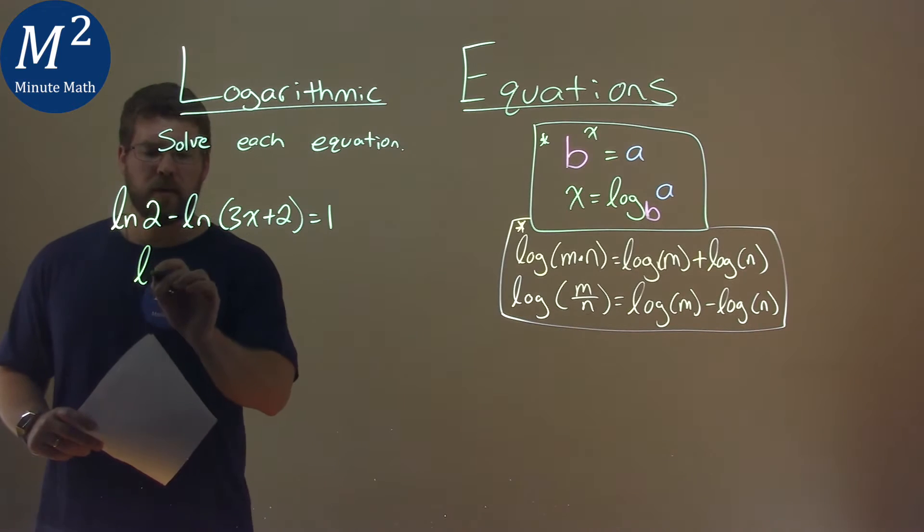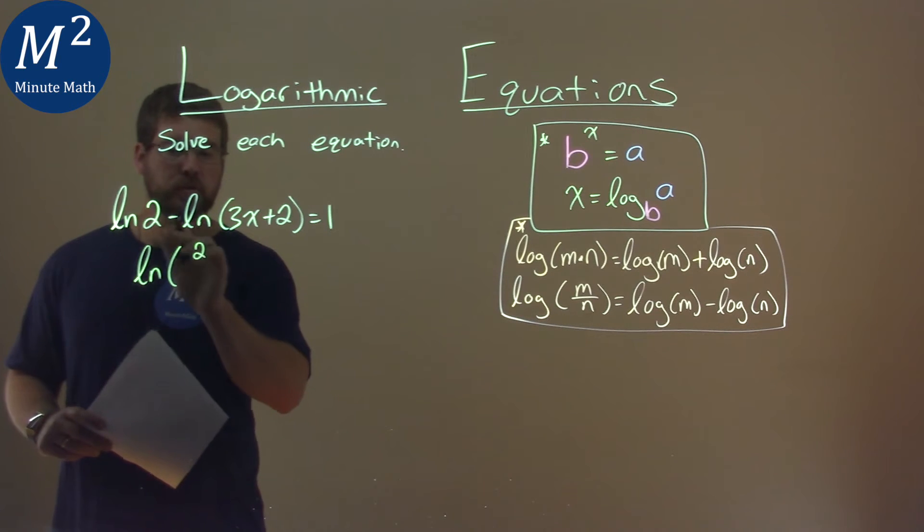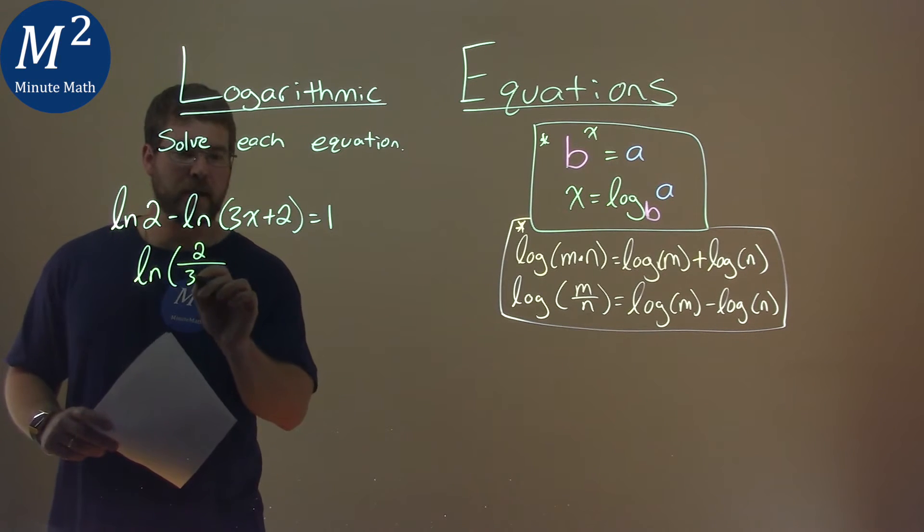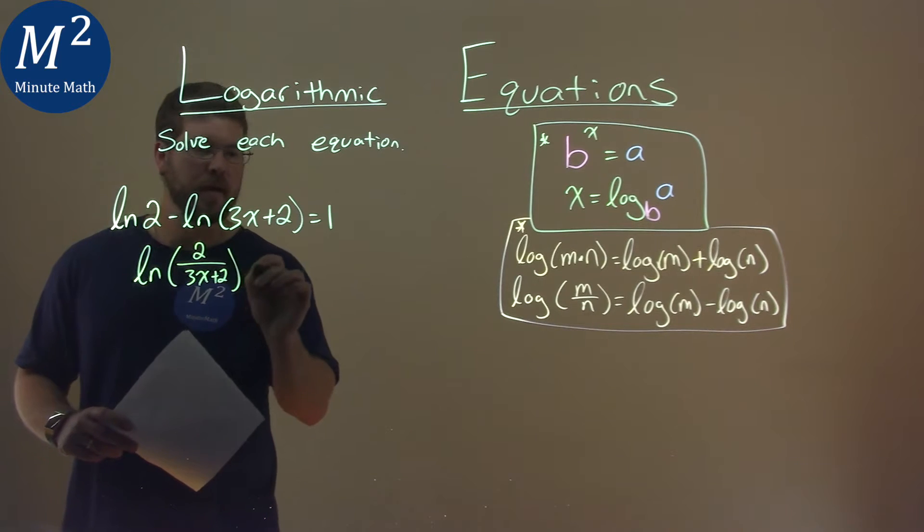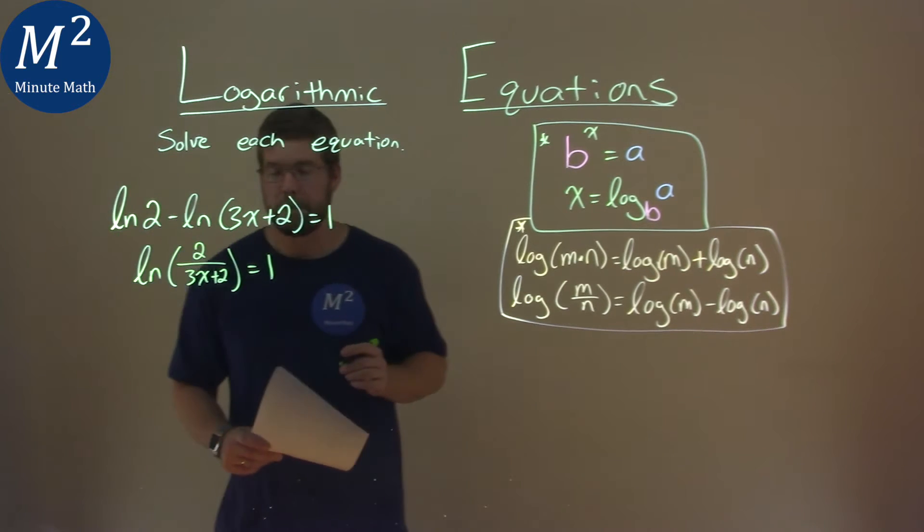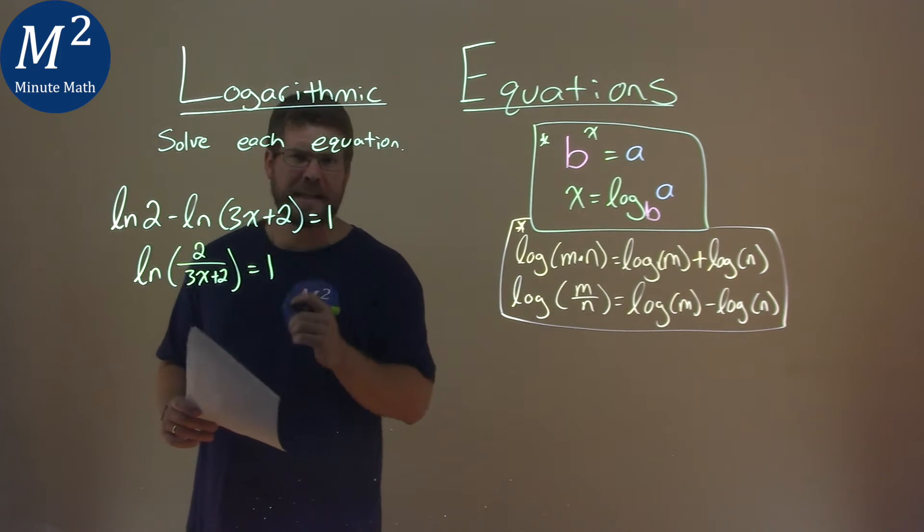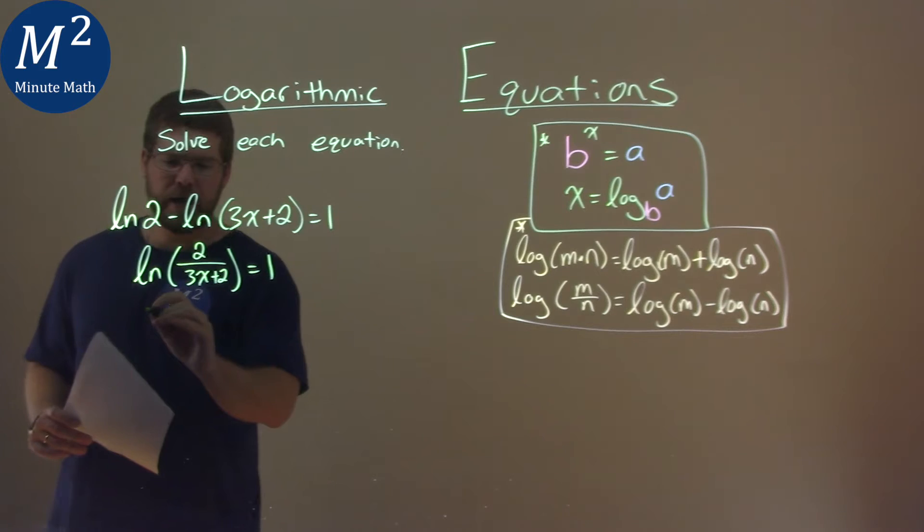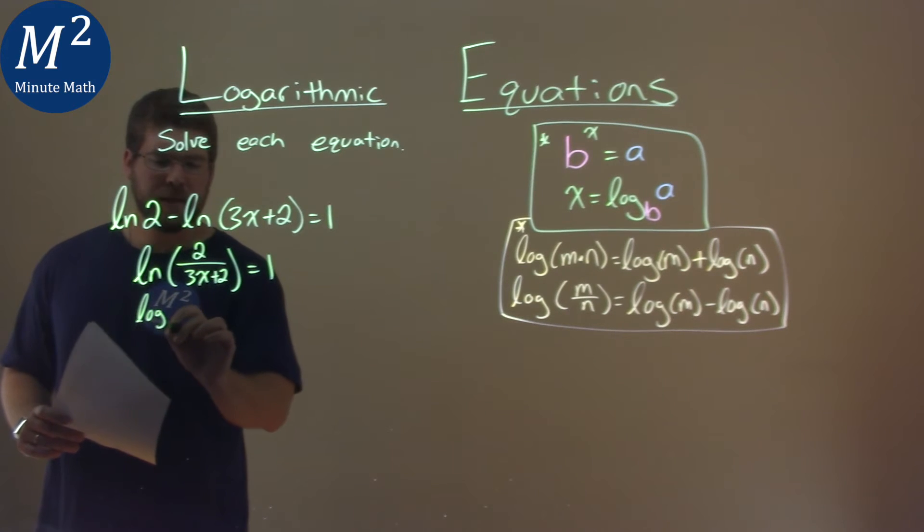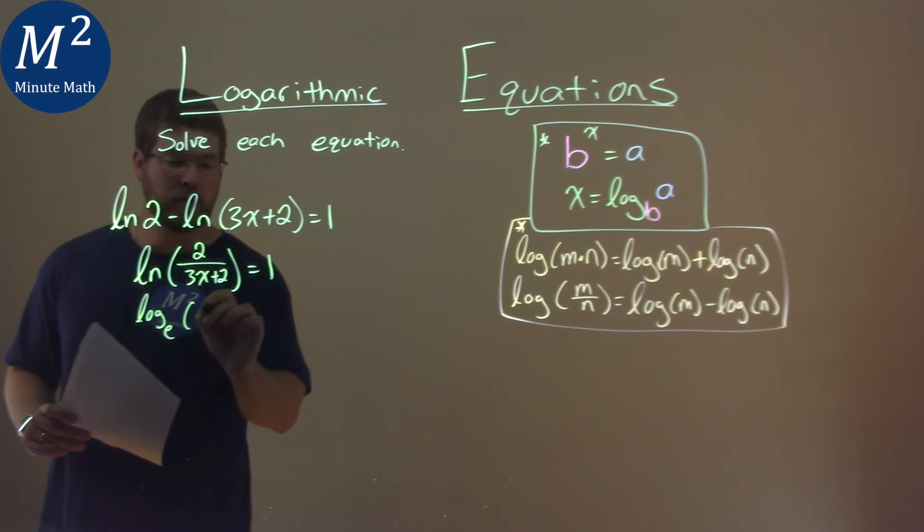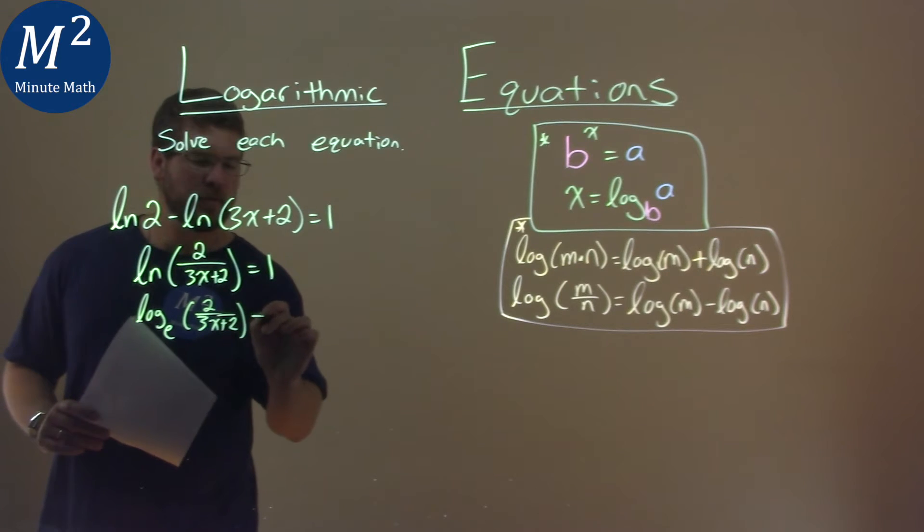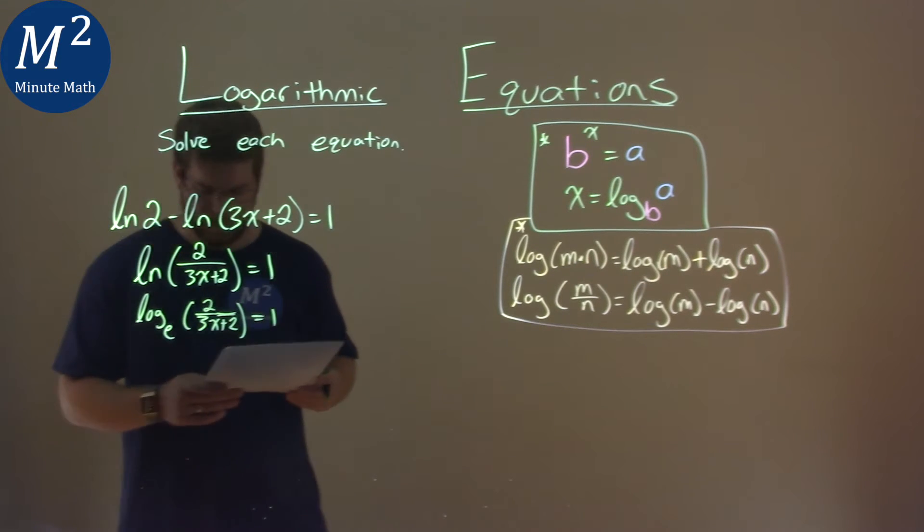So this can become the natural log of 2 divided by the 3x plus 2 and that's going to equal the 1. And remember when I said natural log is equal to log base e? We're going to need that here. So we have the log base e instead of natural log of 2 over 3x plus 2. Now you won't always have to do this step but it makes it a little easier to see.